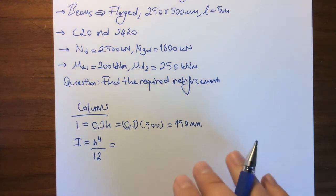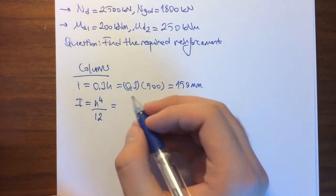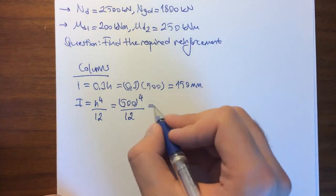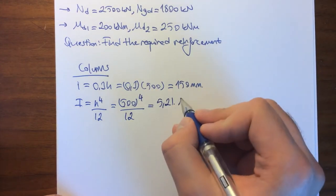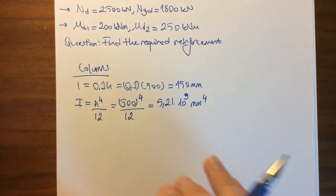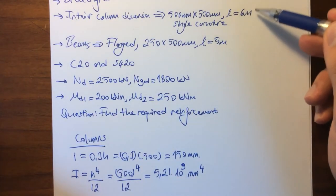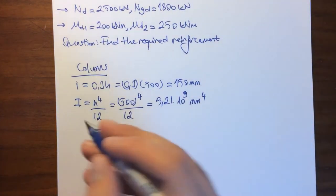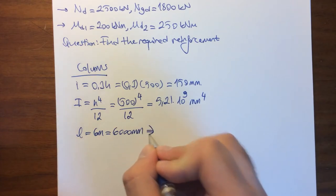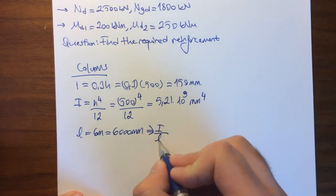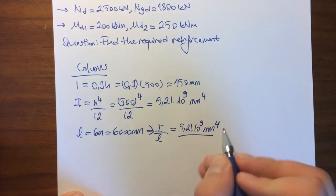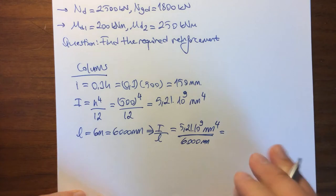When we do the computation, we get 5.21 × 10^9 millimeters to the 4th power. Since we know the length of the internal columns is 6 meters, which equals 6,000 millimeters, we can get the I over L ratio as 5.21 × 10^9 millimeter to the 4th divided by 6,000 millimeters, and the result is 0.87 × 10^6 millimeters cubed.